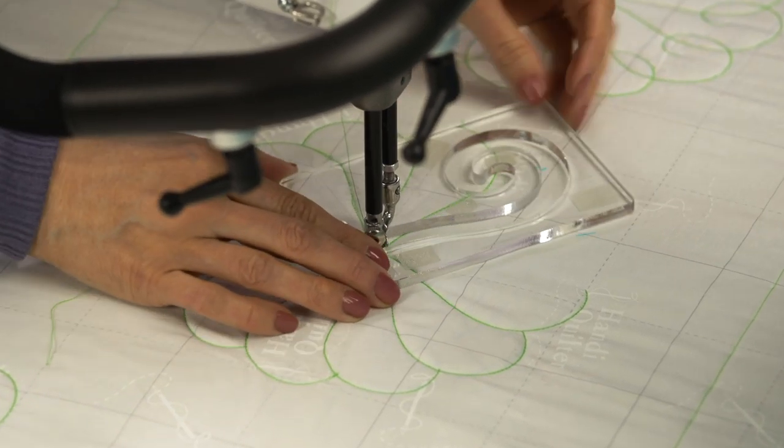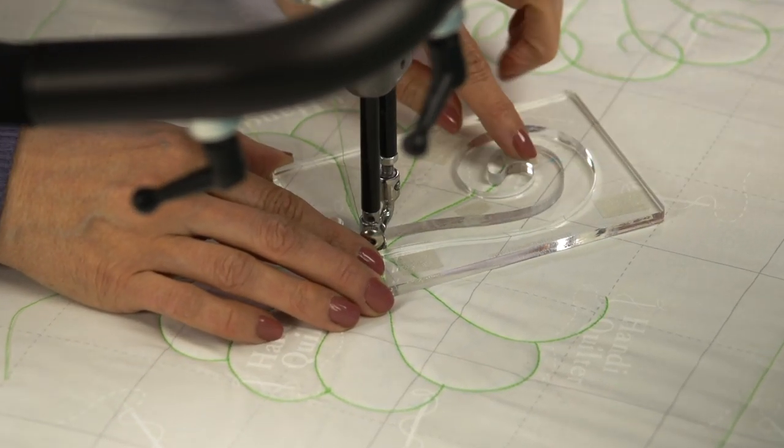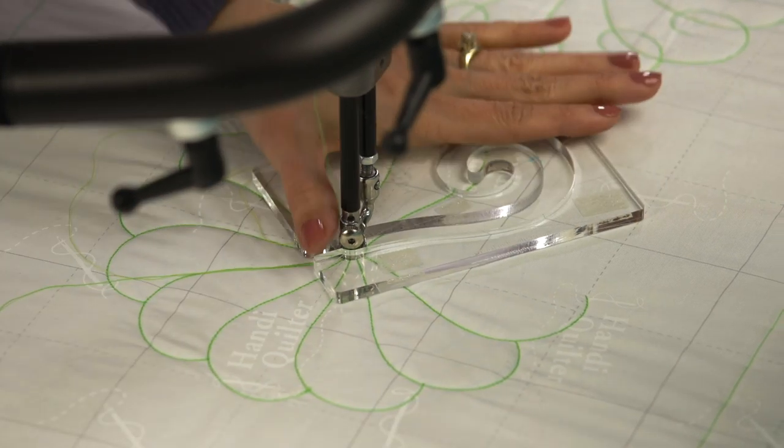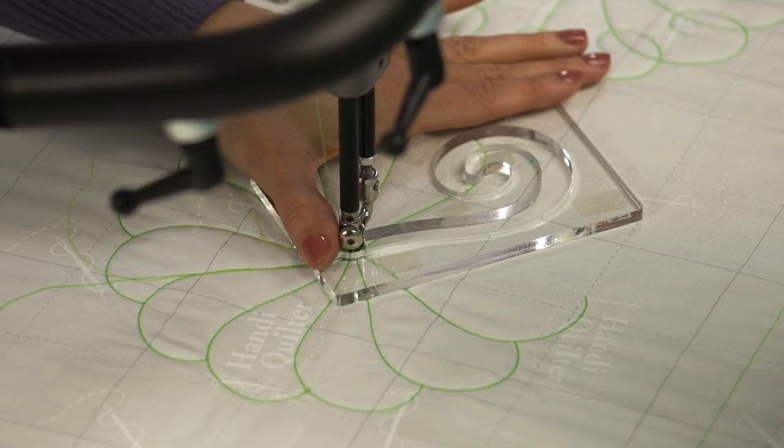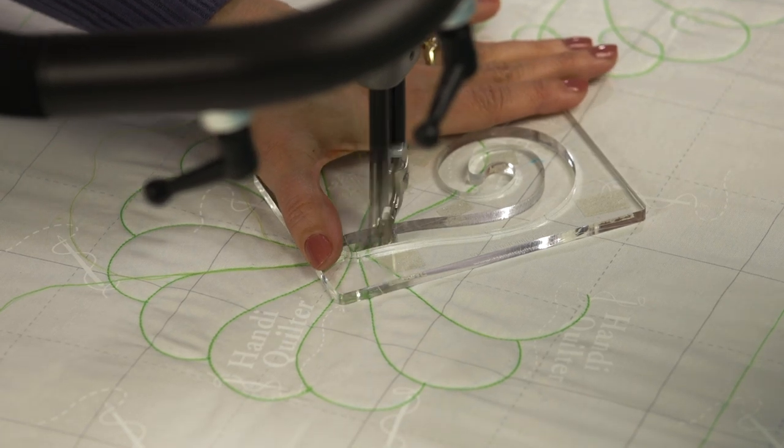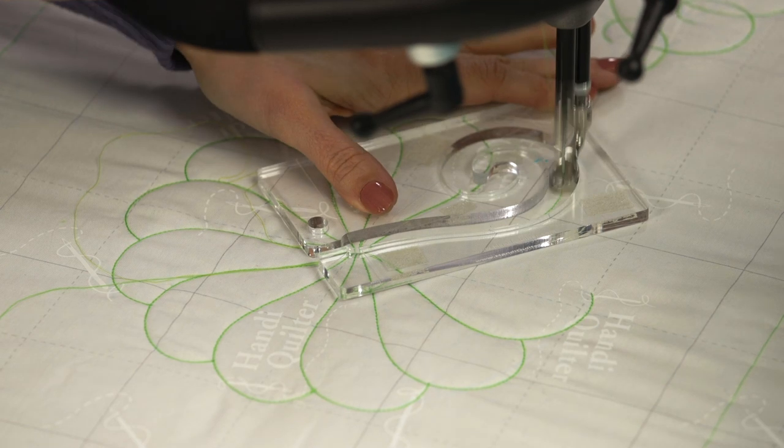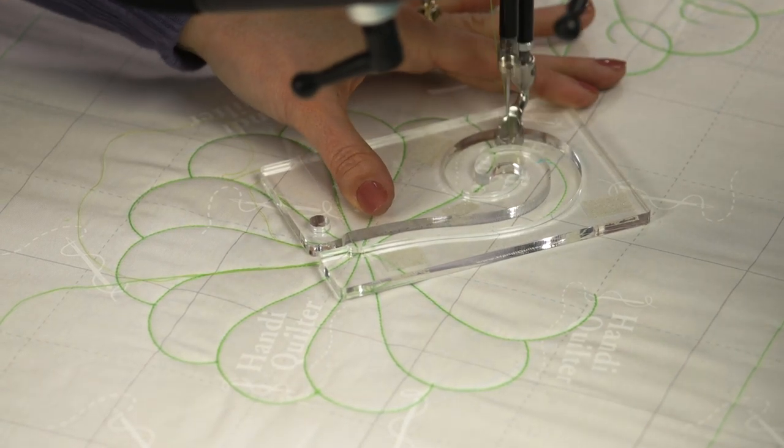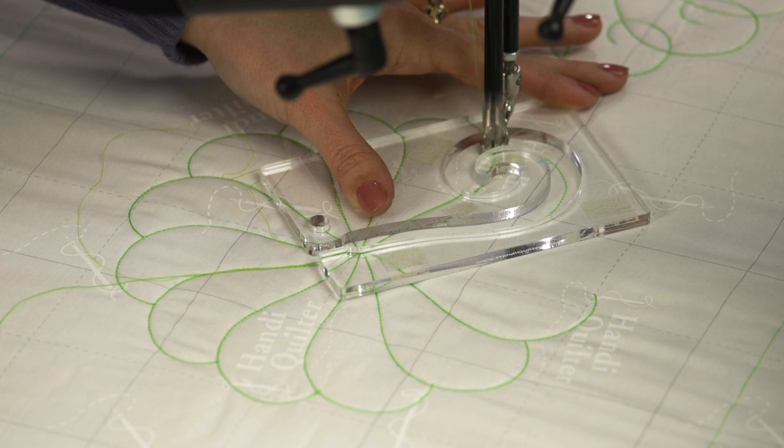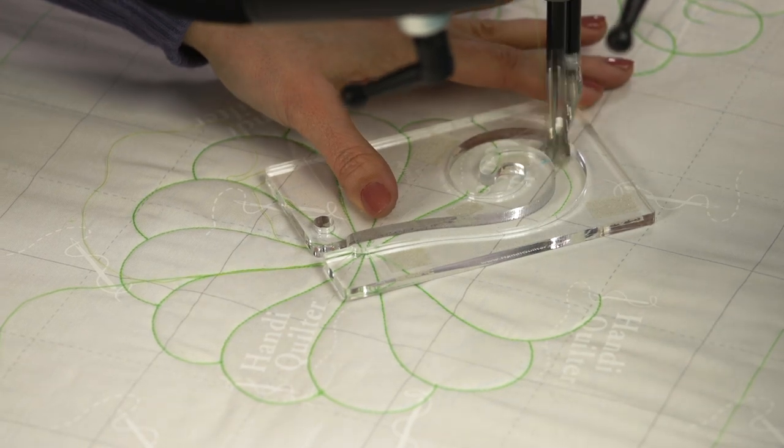Once again, I'm using that same grid marking to line up with my design. I'm going to hold my ruler. Now as I'm coming around, I'm going to stop, I'm not going to do the full swirl. I'm stopping right here at my previous line, and then coming back.